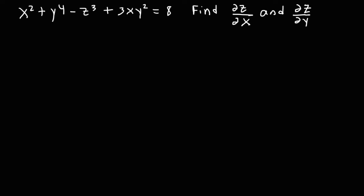Here we have an equation in terms of x, y, and z, and we're asked to find the partial derivative of z with respect to x, and the partial derivative of z with respect to y. We're going to use the implicit function theorem to get the answer, and then talk about another way to get the answer. So let's go ahead and begin.